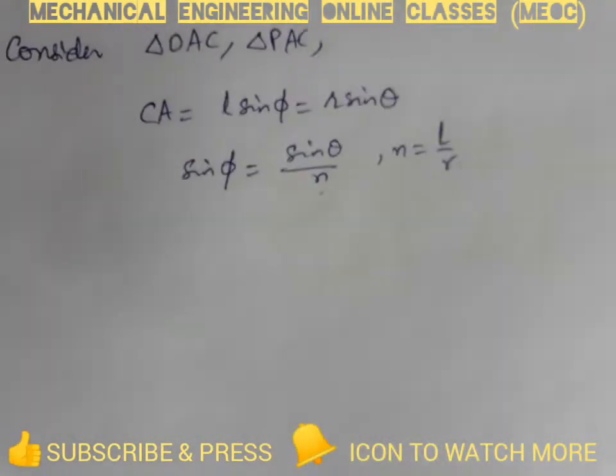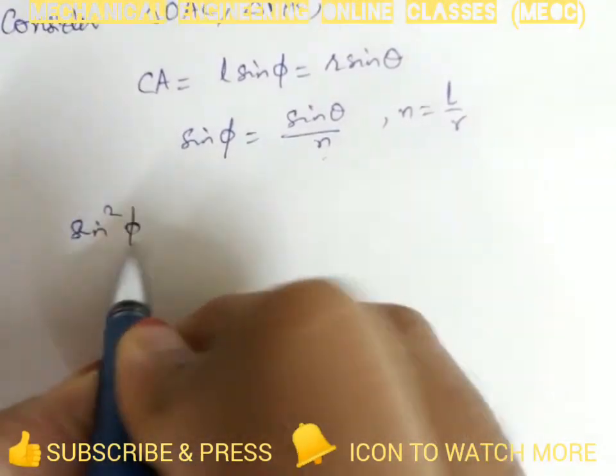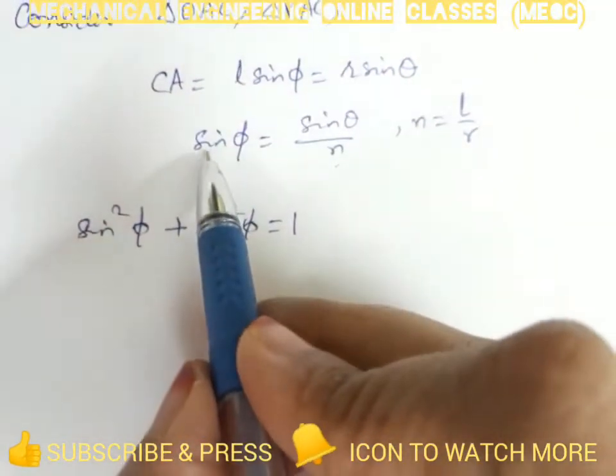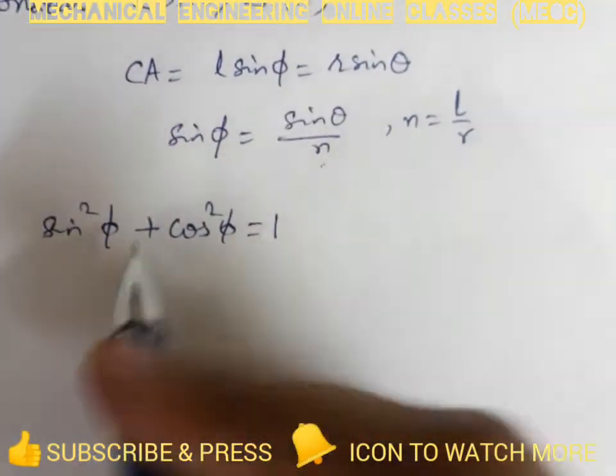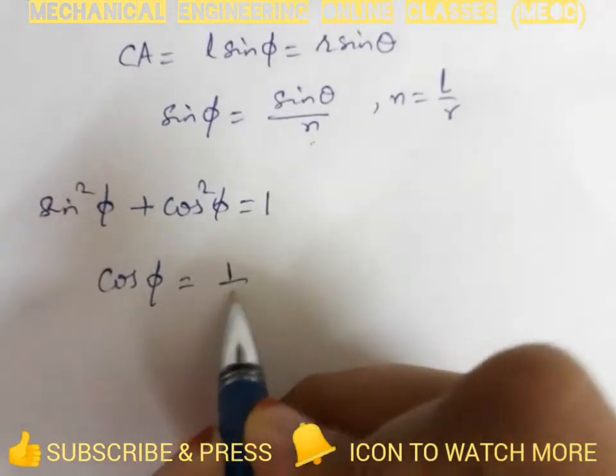As we know that sine square phi plus cos square phi equals 1, and we know sine phi in terms of sine theta and n, we can find cos phi as 1 by n root over n square minus sine square theta.